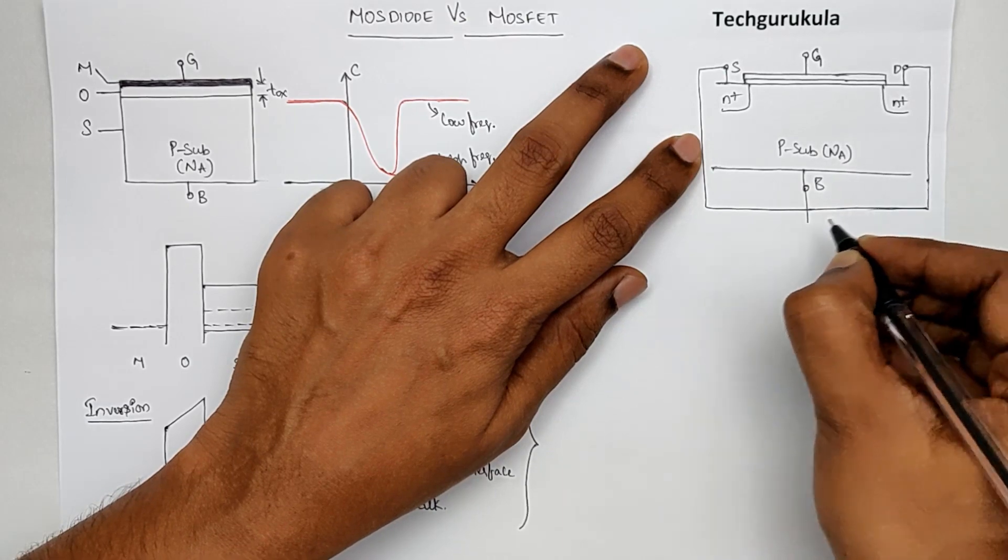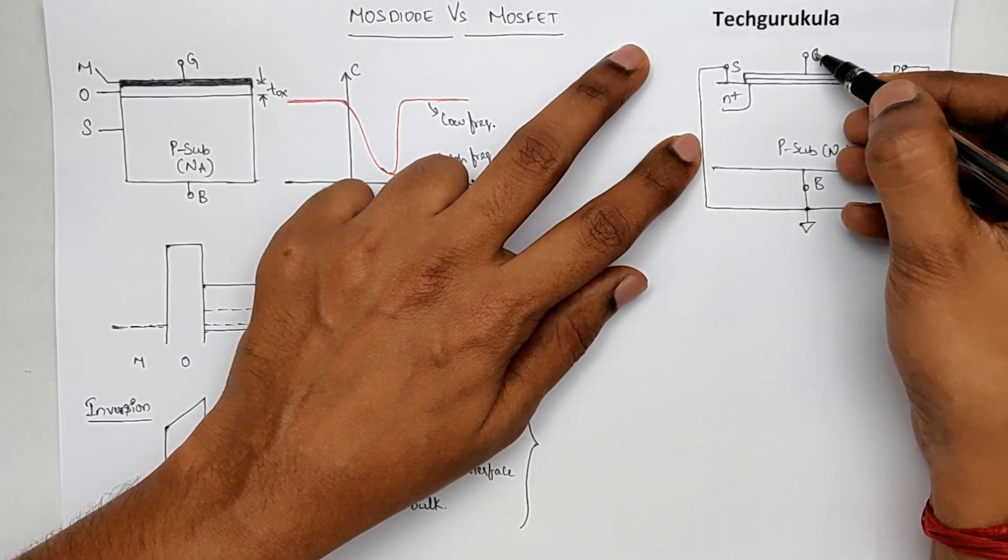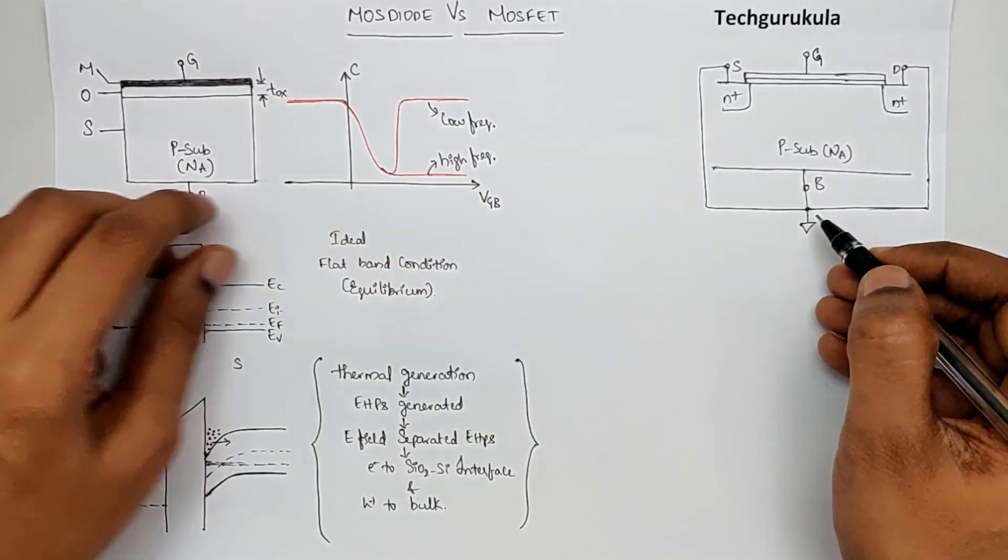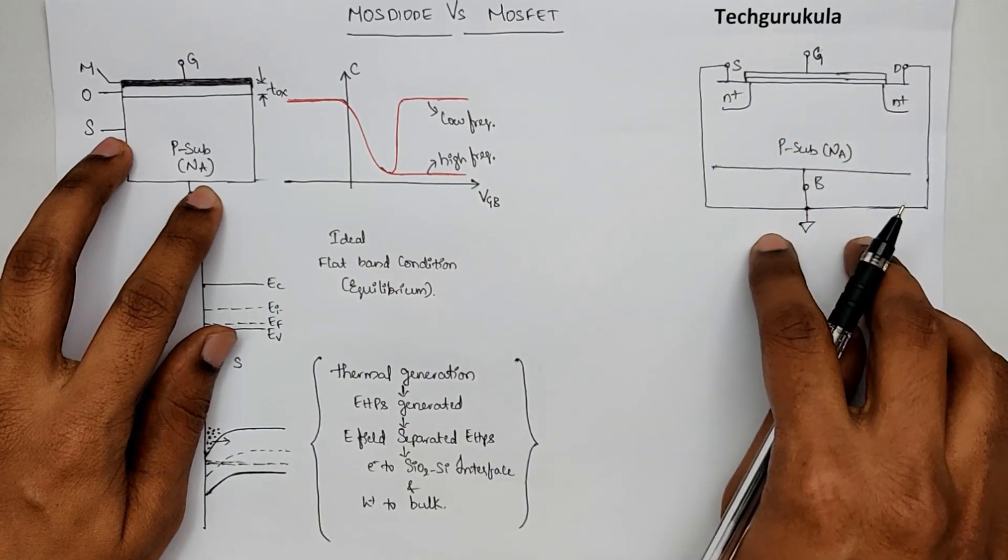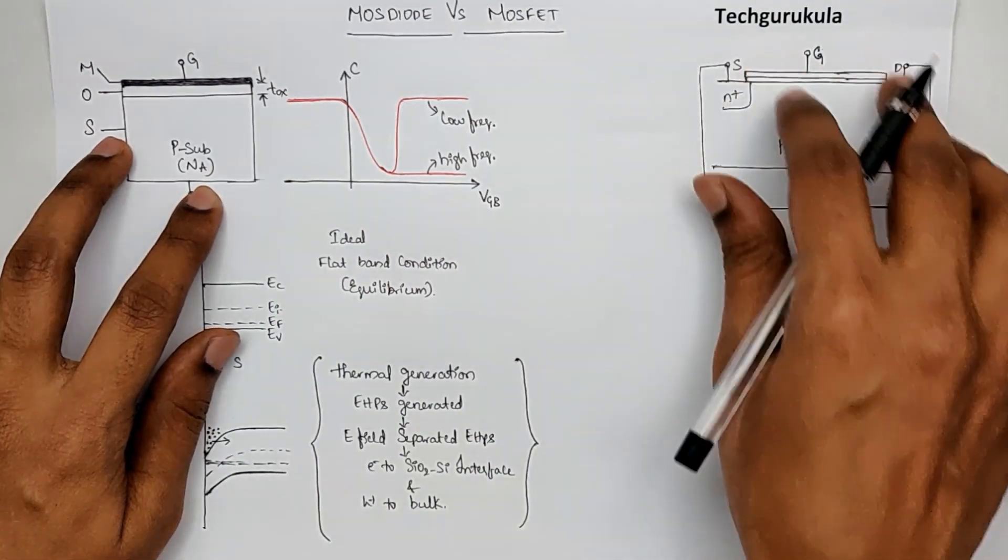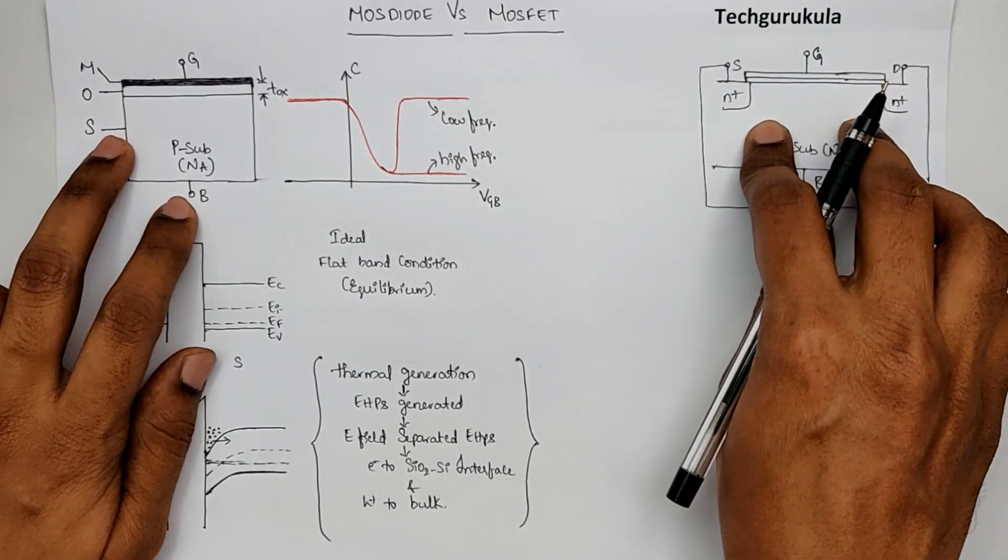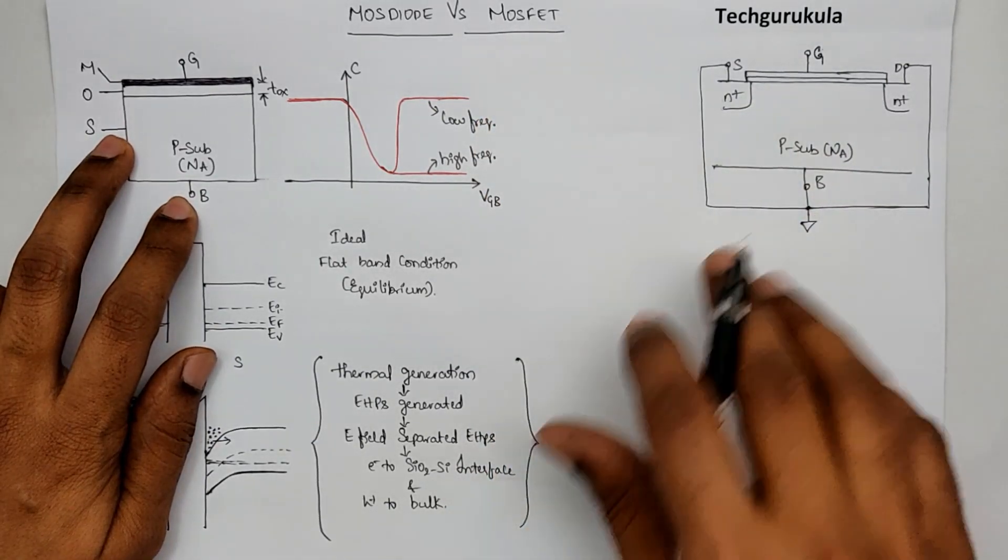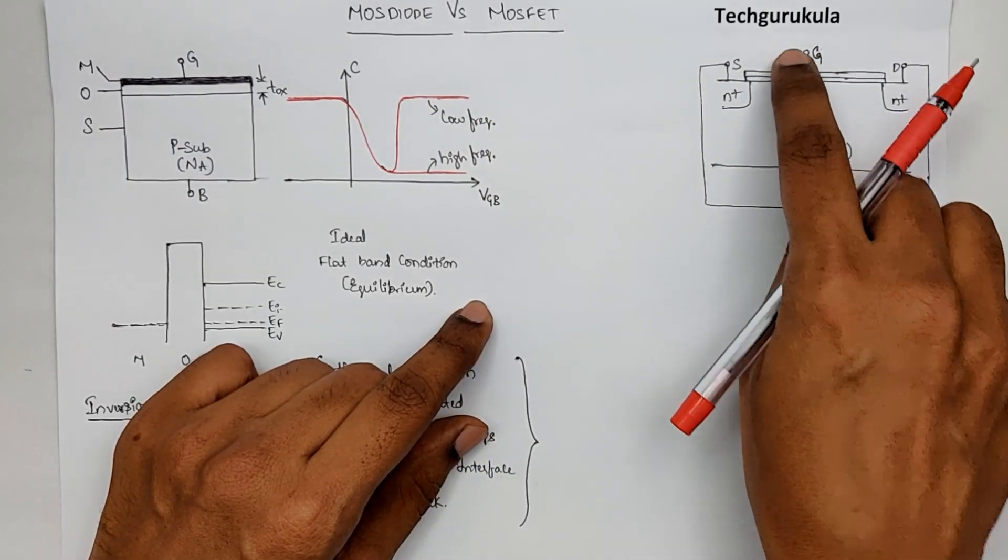We have only G and this terminal. It looks like a two-terminal structure. Now, let's see what happens in this structure at low frequencies and high frequencies. Under equilibrium, let's say when Vg is also 0, let's see the energy band diagrams in this case.